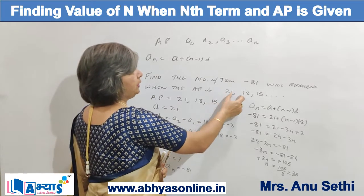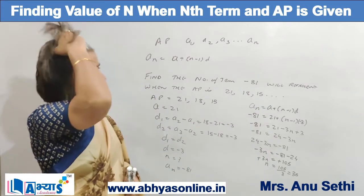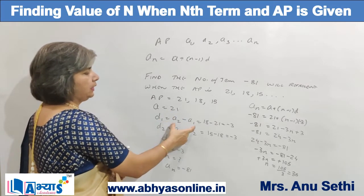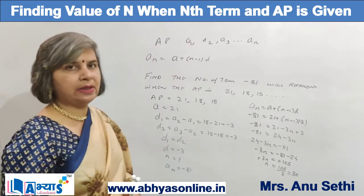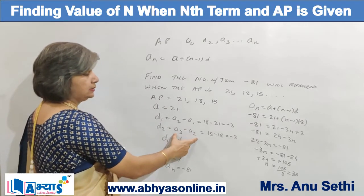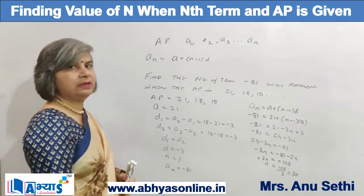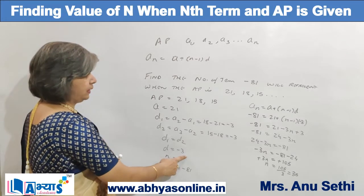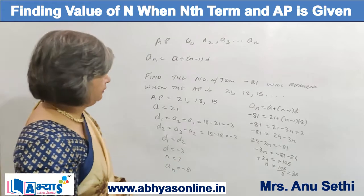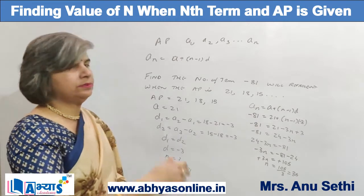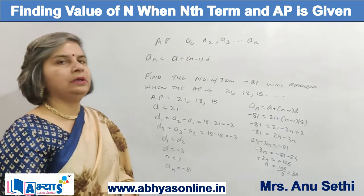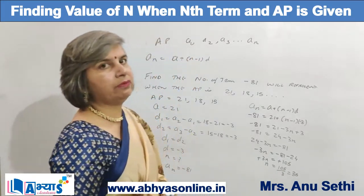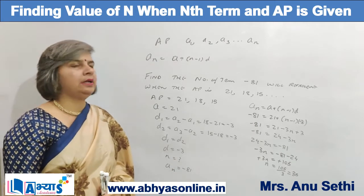We were given the AP 21, 18, 15. We first verified it is an AP: a = 21, d1 = a2 - a1 = -3, d2 = a3 - a2 = -3. Since d1 = d2, the common difference is -3. Then, substituting the values of a_n, a, and d in the formula and solving for n, we found n = 35.